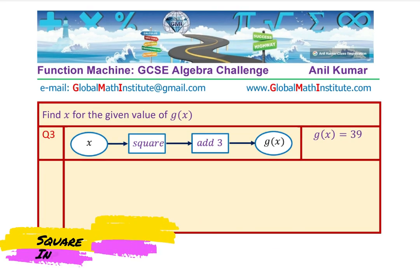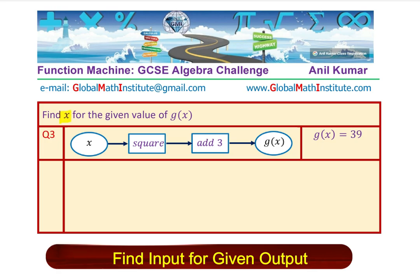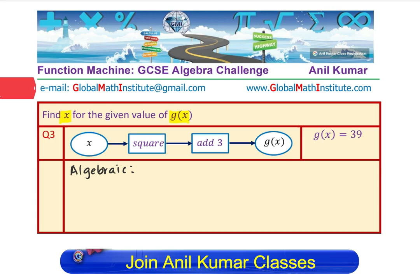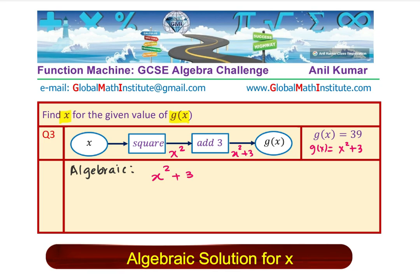Here is the last question, which I have written the operation in words, x square add 3, you get g(x) and for the given value of g(x) is 39, you have to find x. Find x for the given value of x. You can adopt any method. Let's do with algebraic method. When you square, you get x square here. And then it is add 3. We have x square plus 3. That is g(x). You can say g(x) equals to x square plus 3. And we are given the value 39. Therefore, I am going to write down the equation as x square plus 3 equals to 39.